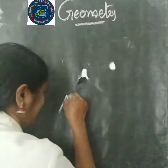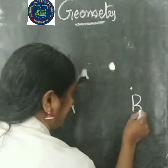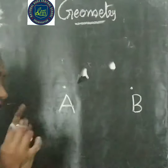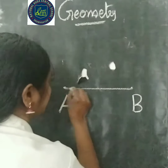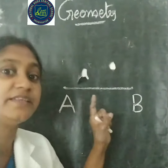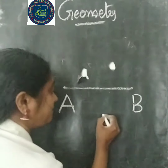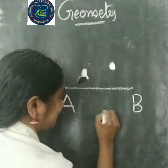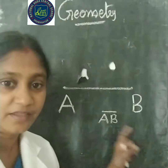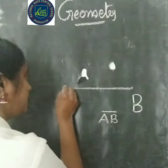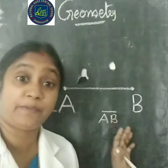If there is a point A and there is a point B in this plane, the shortest distance between these two points we can draw like this. This line segment is the shortest distance between these two points. And it can be written like this — it can be read as line segment AB. There is an end point here and here also an end point. So, for a line segment, both sides there will be end points.